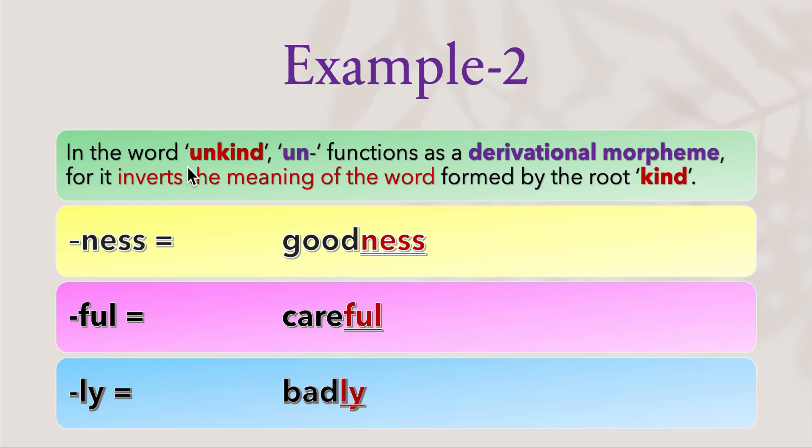Example two: In the word 'unkind', 'un-' functions as a derivational morpheme, for it inverts the meaning of the word formed by the root 'kind'. We have some more examples.